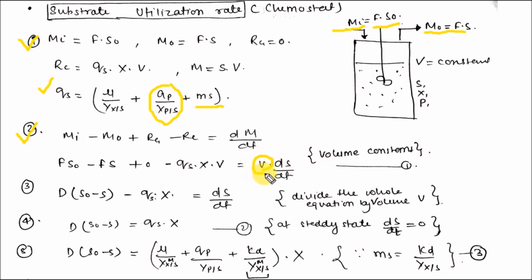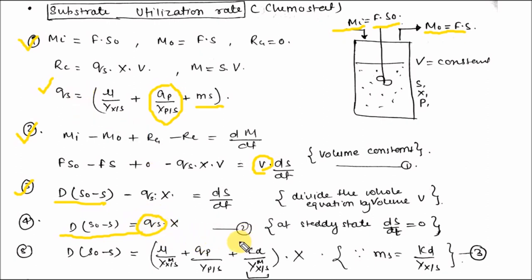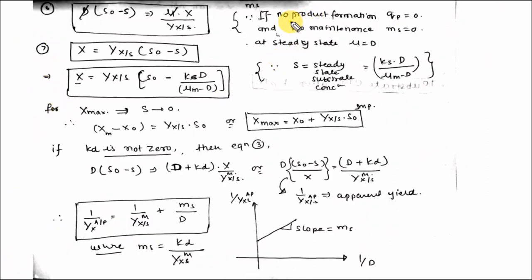Using the material balance equation with these parameter values, and noting that volume is constant (so V comes out of the differential coefficient), dividing by volume converts flow rate into dilution rate. At steady state, dS/dt equals zero. Substituting the complete expression for Q_S, and if there is no product formation (Q_P equals zero) and no maintenance (m_S equals zero), with μ equals D at steady state, you obtain: S_naught minus S equals X divided by Y_XS.